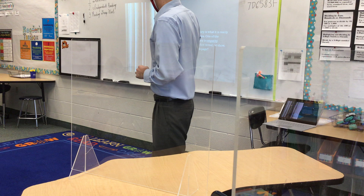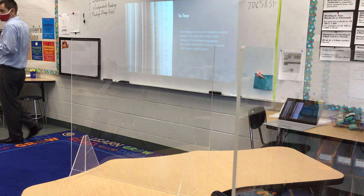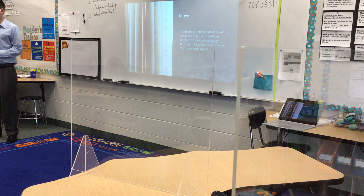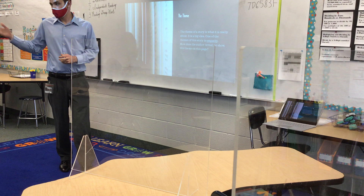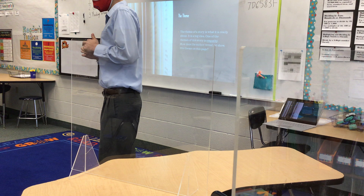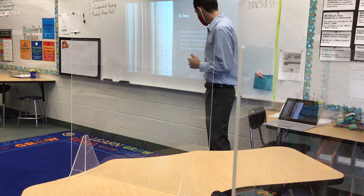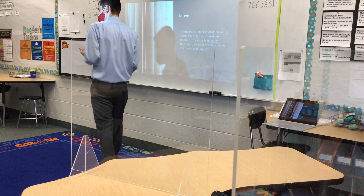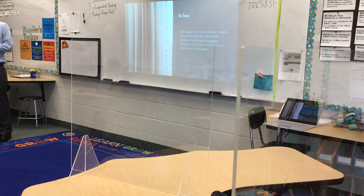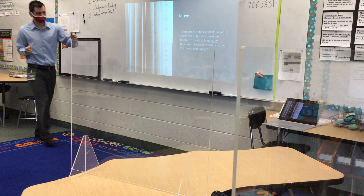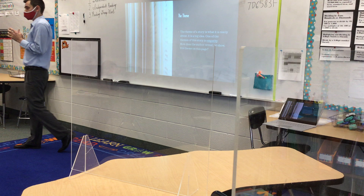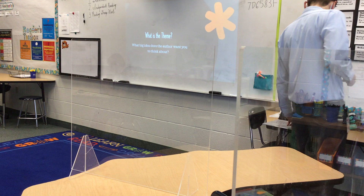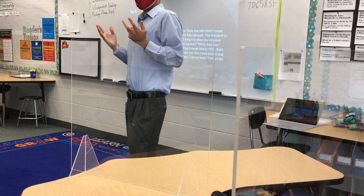Empathy. Do we know what the definition of empathy might be? [Zoe responds: feeling sad for another person, feeling what somebody else is feeling.] Feeling what somebody else is feeling — yes, that's a good way of describing it. Feeling sad for somebody else, trying to walk in their shoes — those are all good definitions for the word empathy. So how does the author reveal or show this theme on page 16? We just read page 16, and one of the themes is empathy. There are more in there. How can we come to the conclusion that empathy is one of the themes based on the evidence we have?